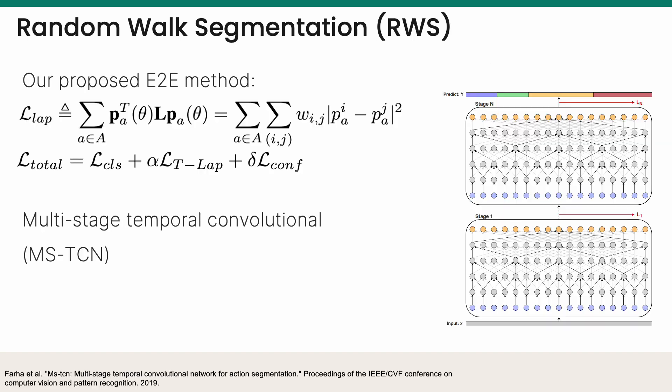Our proposed end-to-end method takes advantage of the three operation modes, where we optimize a parametric neural network for temporal action segmentation. Our loss is composed of a cross-entropy classification loss